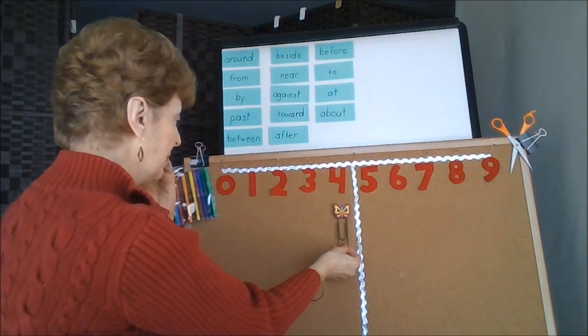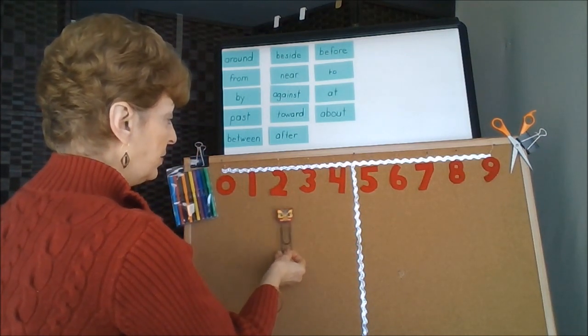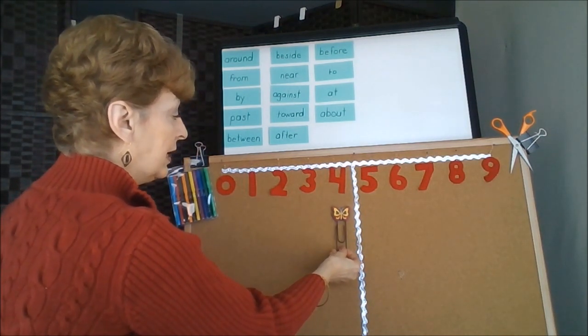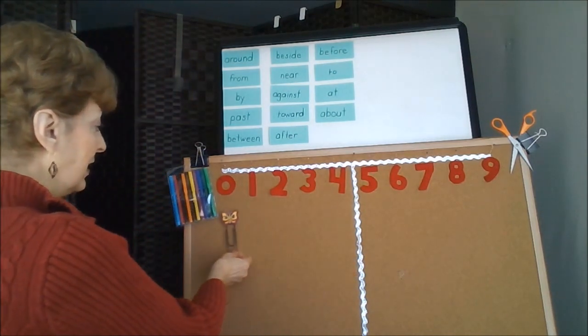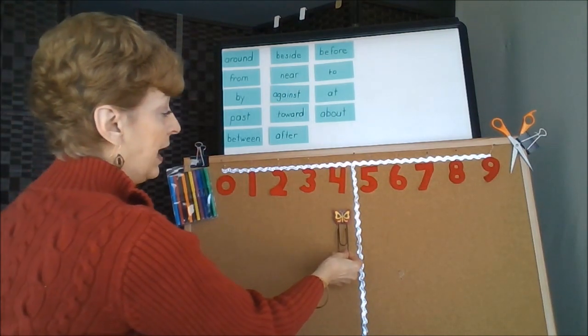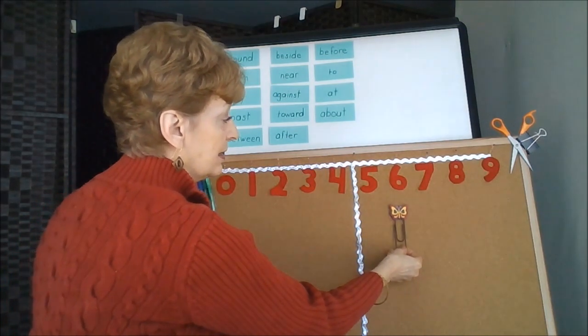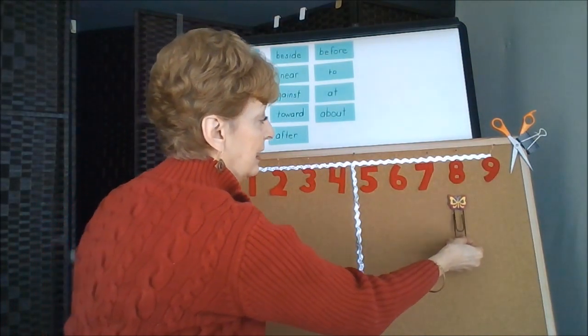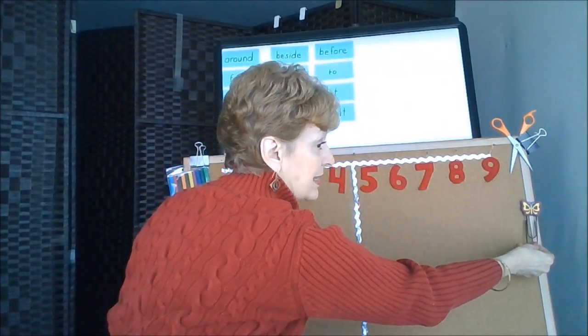So anytime you have numbers 0, 1, 2, 3, and 4, it's going to be closer to the item that you have to the left. And if you have numbers, jumping over the middle, 5, 6, 7, 8, or 9, you're closer to the scissors.